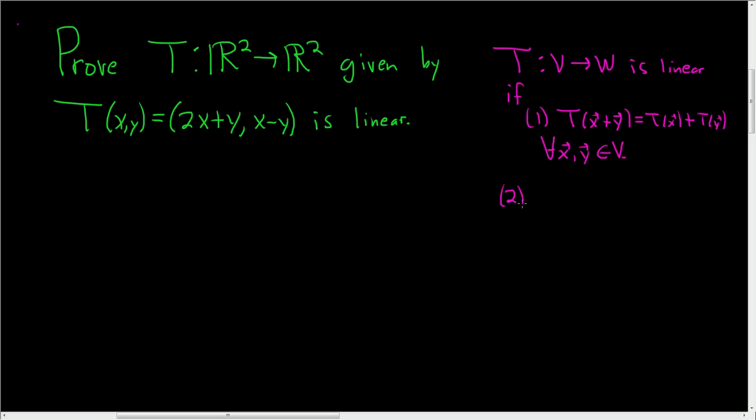And the second condition is that if you take a scalar, let's call it c, and you multiply it by T of x, this is simply equal to T of c times the vector x. And this has to be true for all scalars c in our field and for all vectors x in our vector space V.